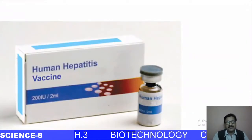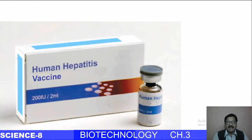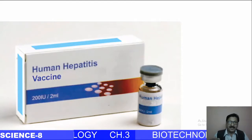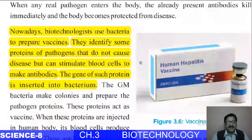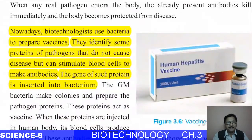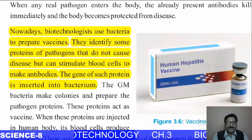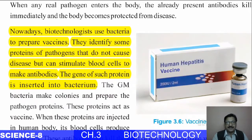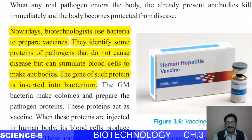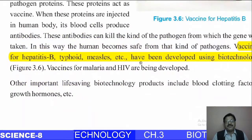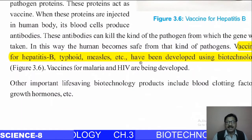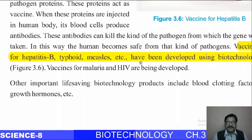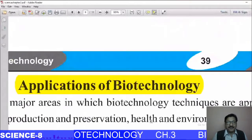Human hepatitis vaccines are also prepared with the help of biotechnology. Biotechnologists use bacteria to prepare vaccines. They identify proteins of pathogens that don't cause disease but can stimulate blood cells to make antibodies. The gene for such a protein is inserted into bacteria. Vaccines for hepatitis B, measles, and many other diseases have been developed using biotechnology.